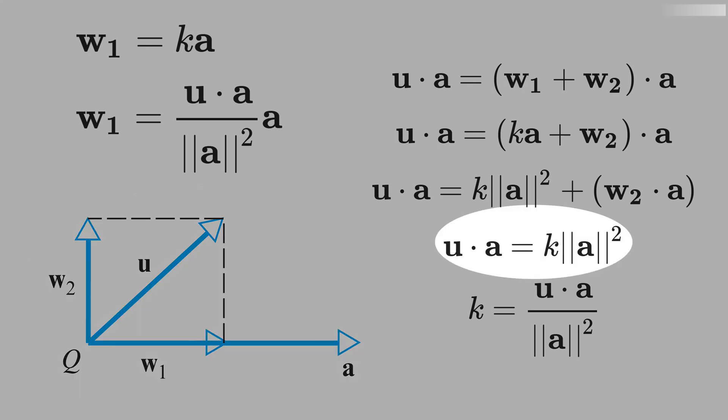And then, in this equation, we isolate k, and k equals the dot product of u and a divided by the square of the norm of a.